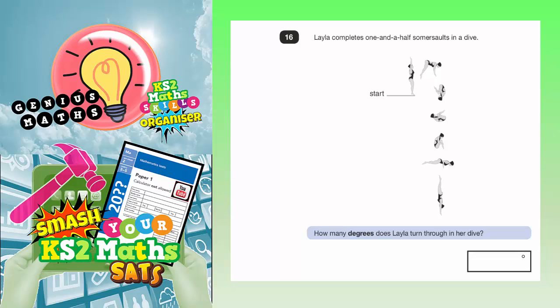Question 16. Layla completes one and a half somersaults in a dive. How many degrees does Layla turn through in her dive?